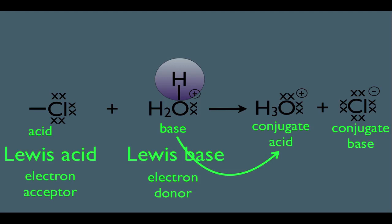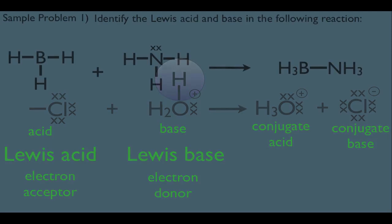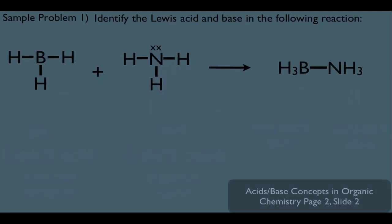This is a more detailed conceptualization of an acid-base reaction, and sometimes in organic chemistry we may need to refer to this way of thinking. Sample problem: identify the Lewis acid and base in the following reaction. First, let's make an important observation — look at the product and notice the new bond that's being formed: the bond between the nitrogen of ammonia and the boron of BH3.